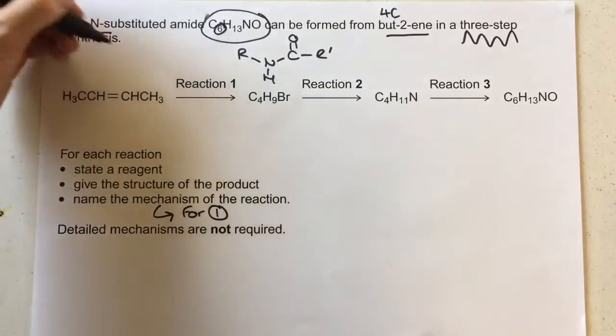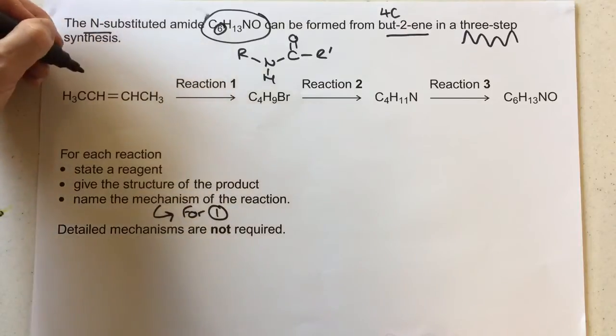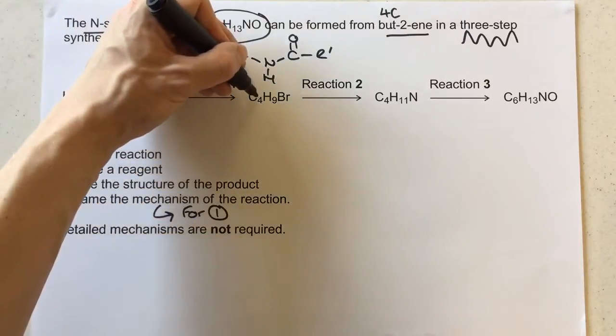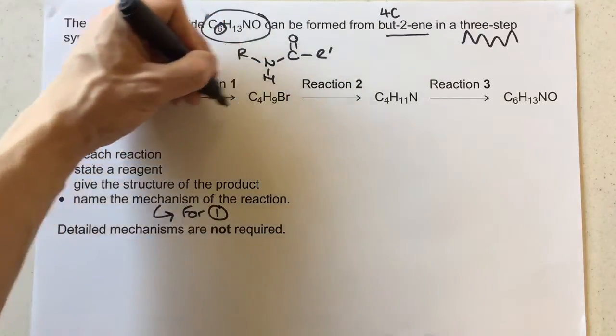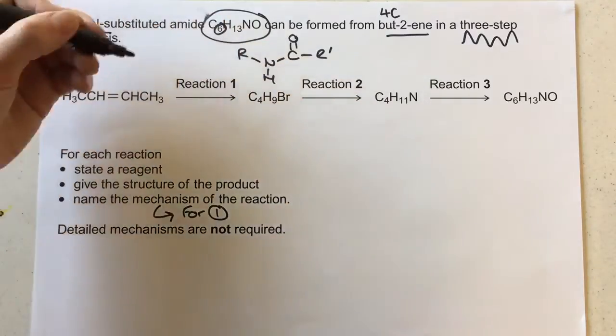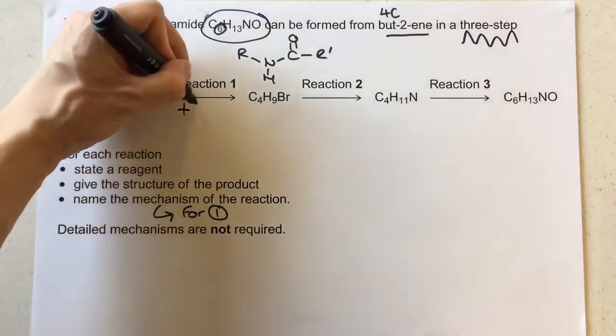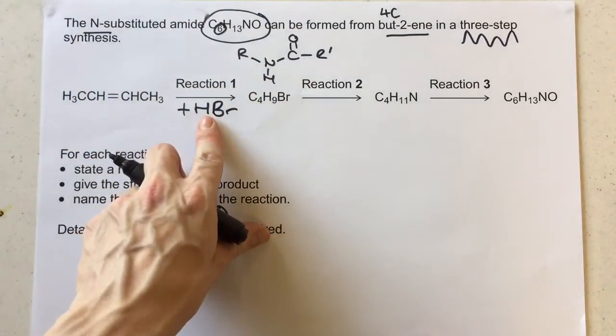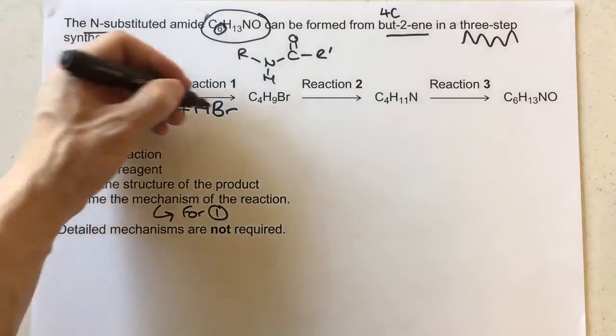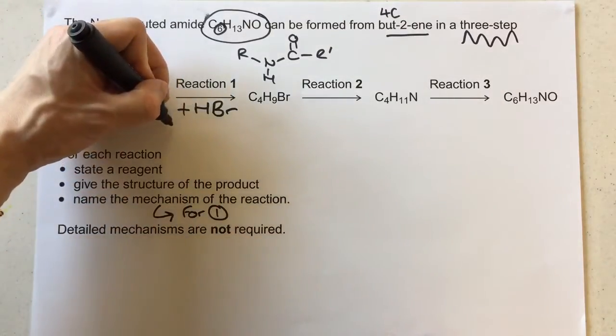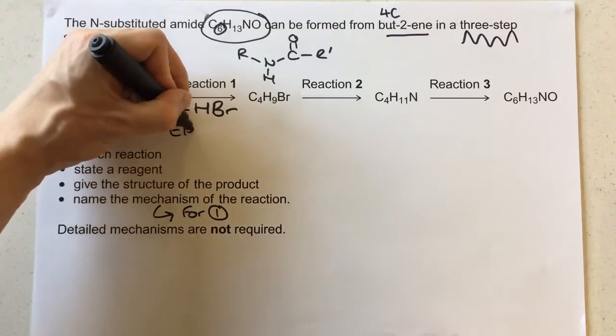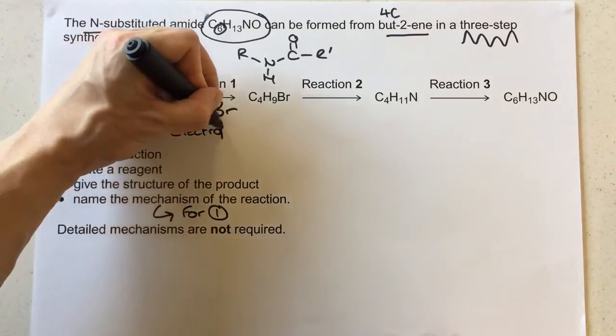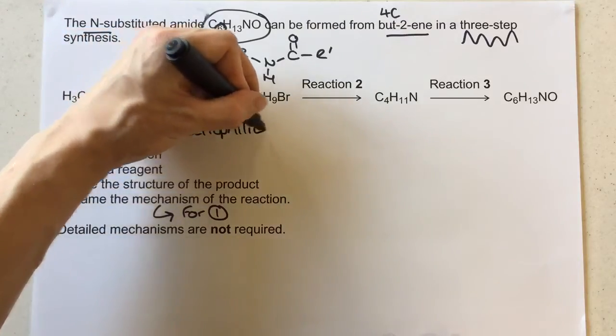So what we've got to begin with is but-2-ene, which is a symmetrical alkene, so we don't have to worry about anything about major and minor, but as you can see here we're going to C4H9Br. Now the difference between these two molecules is quite literally our reagent, it's HBr. So HBr is our reagent just here, and you would react the HBr with this alkene in an AS mechanism, if you remember it, it's electrophilic addition.